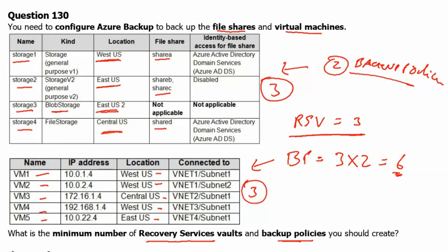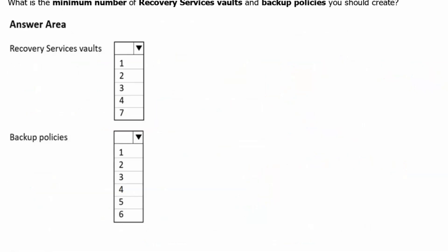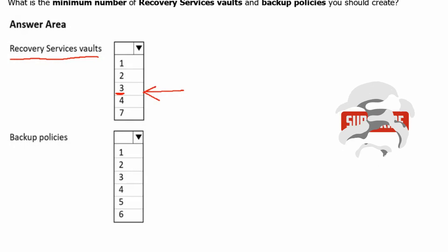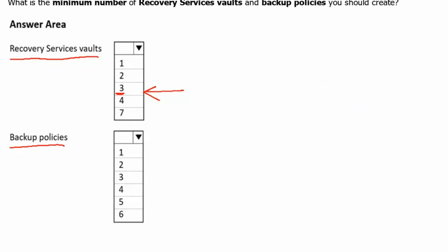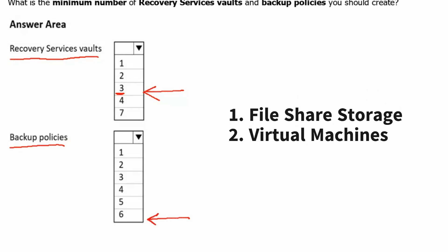Scrolling down to the answer area: the number of recovery service vaults needed is three, since we have three regions. Each recovery service vault has one backup policy per resource type — storage and virtual machines — so the total number of backup policies is six.